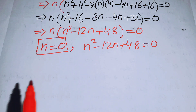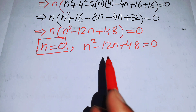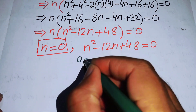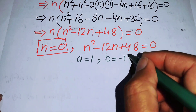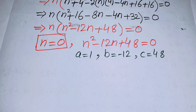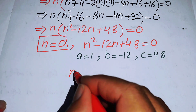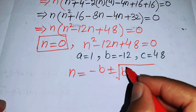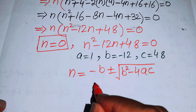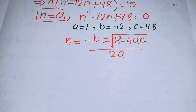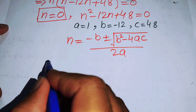To find the other roots we need to solve the quadratic equation n² - 12n + 48 = 0 using the quadratic formula. We identify a = 1, b = -12, and c = 48. The quadratic formula is n = (-b ± √(b² - 4ac)) / 2a.